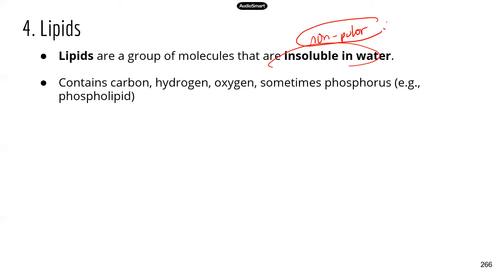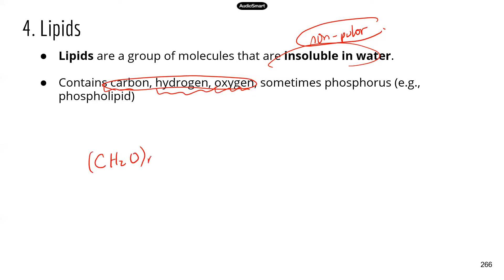If you put butter or oil in water, you know they don't mix well. Lipids contain some of the common elements such as carbon, hydrogen, and oxygen. Remember these three elements are also in carbohydrates, so we have C, H₂O — that's the chemical formula for carbohydrates.